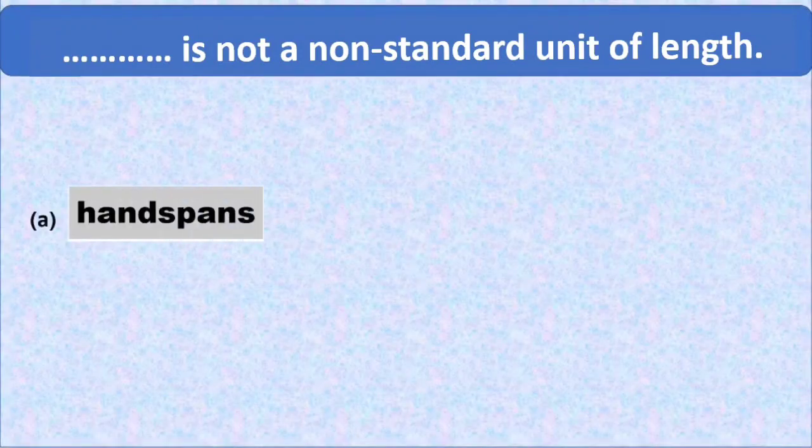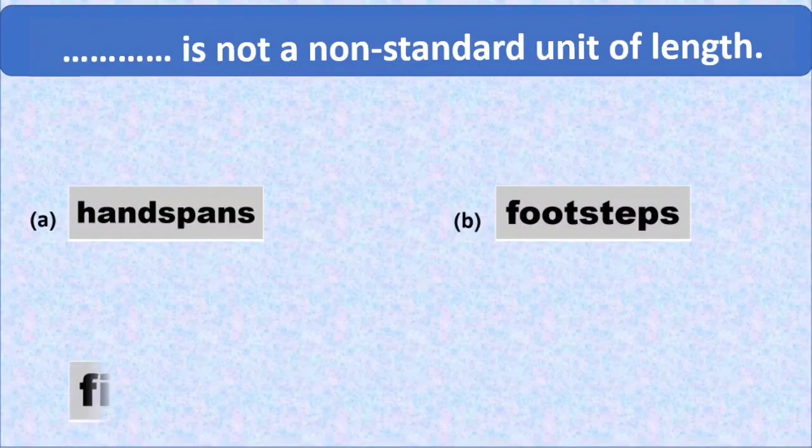Today's first question is, which is not a non-standard unit of length? Here we have four options to this question. Option A is hand span. Option B is footsteps. Option C is fingers, and option D is inches.